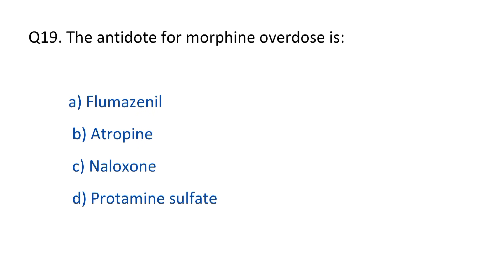Question No. 19. The antidote for morphine overdose is? The right option is option C, naloxone.